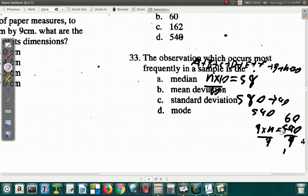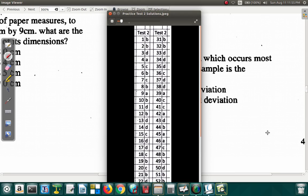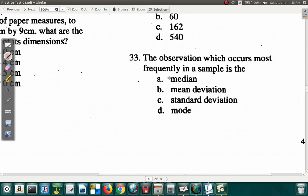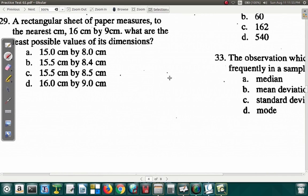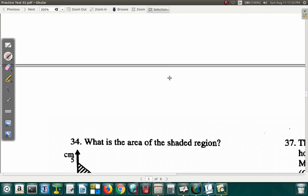33. Let's erase this rough work and look at question 33. The observation which occurs most frequently in a sample is the - we looked at this a short while ago. It's the mode. So 33, question 33D. So that's the mode.